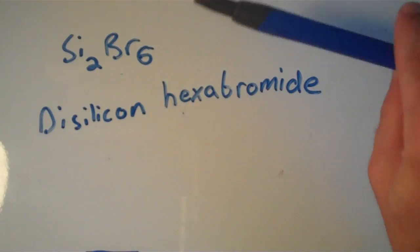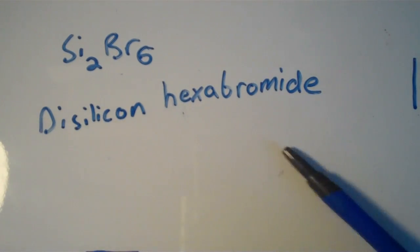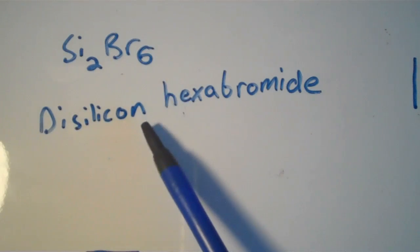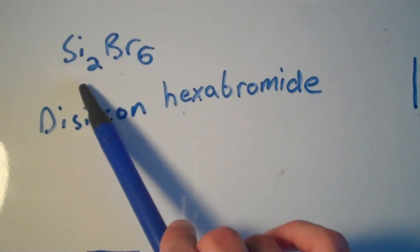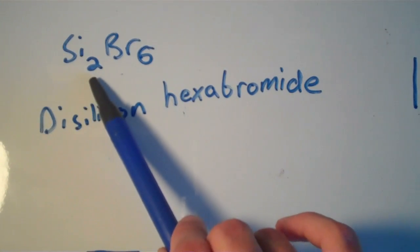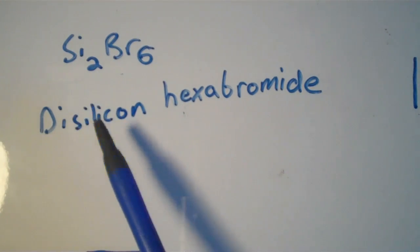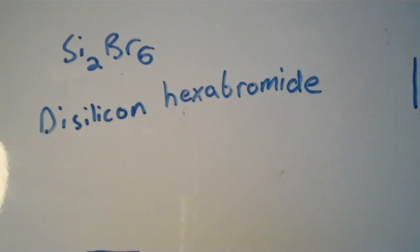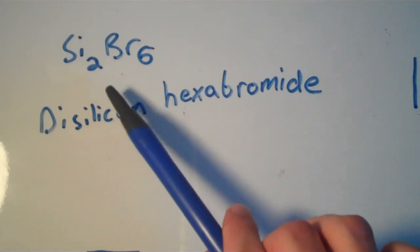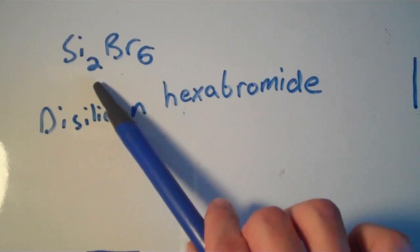When we're given a formula, we usually don't have to figure out which element is going to be first, because in the formula, the more metal-like element is presented first as well. So in the formula for disilicon hexabromide, silicon is the more metal-like element, so that's why it appears first in the chemical formula.